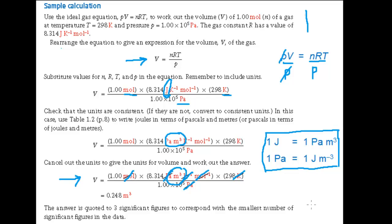Finally, check the significant figures. If you are multiplying or dividing, the number of significant figures in the answer should be the same as the smallest number of significant figures in the data you've used. If we look back at the data given at the top, we see that R is given to 4 significant figures, but everything else to 3. So the answer V equals 0.248 meters cubed is quoted to 3 significant figures.